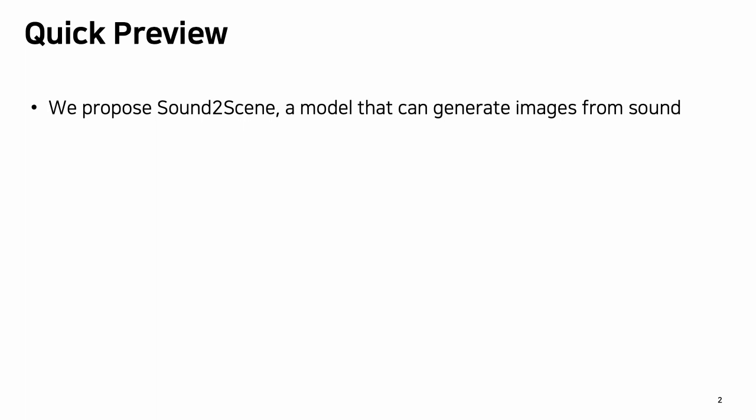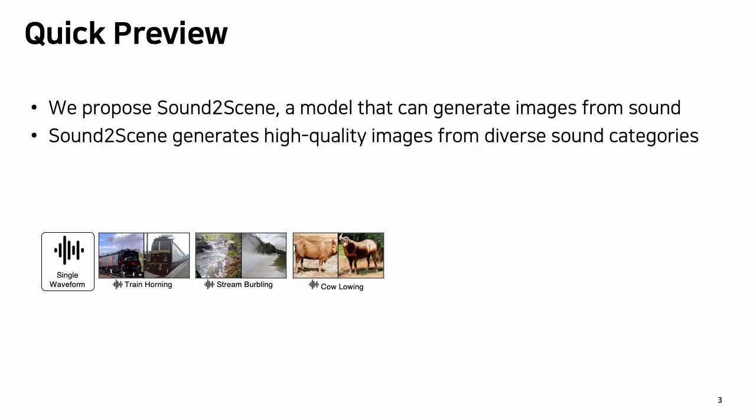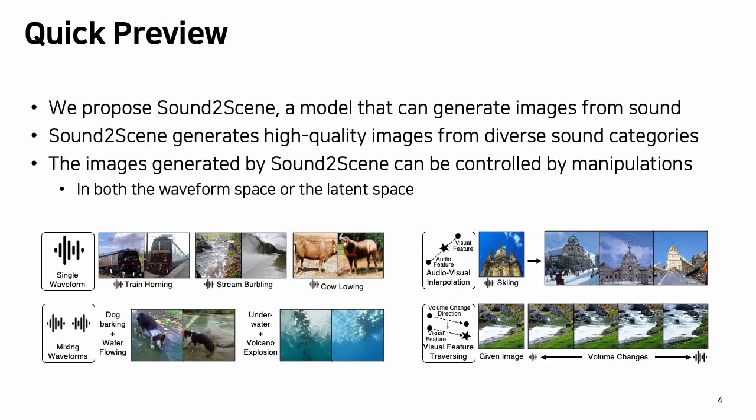In this work, we propose Sound-to-Scene, a model that can generate images from sound. Sound-to-Scene generates high-quality images from diverse sound categories, and we demonstrate that the generated images can be controlled by intuitive manipulations such as mixing waveforms in the waveform space or audio-visual feature interpolation in the latent space.